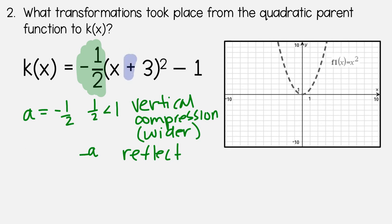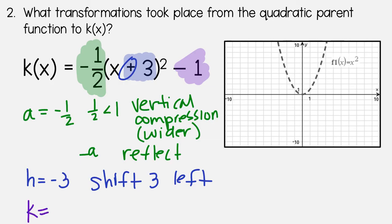Okay, then for h, we have plus 3. But we know that with h, it's always the opposite. So instead of plus, h is actually going to be negative 3. Which means that we are going to shift 3 to the left. And then that minus 1 at the end is our k. So since it's negative, we are going to shift 1 down.